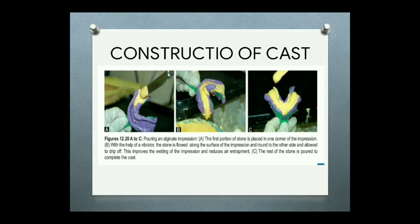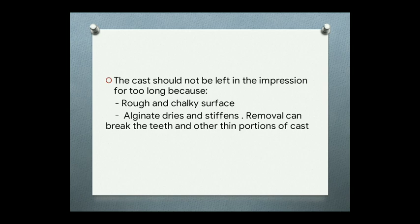For cast construction, the first portion of stone is placed in one corner of the impression, and with the help of a vibrator the stone is flowed along the surface of the impression around to the other side and allowed to drip off — this improves wetting of the impression and reduces air entrapment. The rest of the stone is then poured to complete the cast. The cast should be separated within one hour; keeping the stone in the impression for more than one hour may lead to a rough and chalky surface, and the dried stiffened alginate may break the teeth and thin portions of the cast.